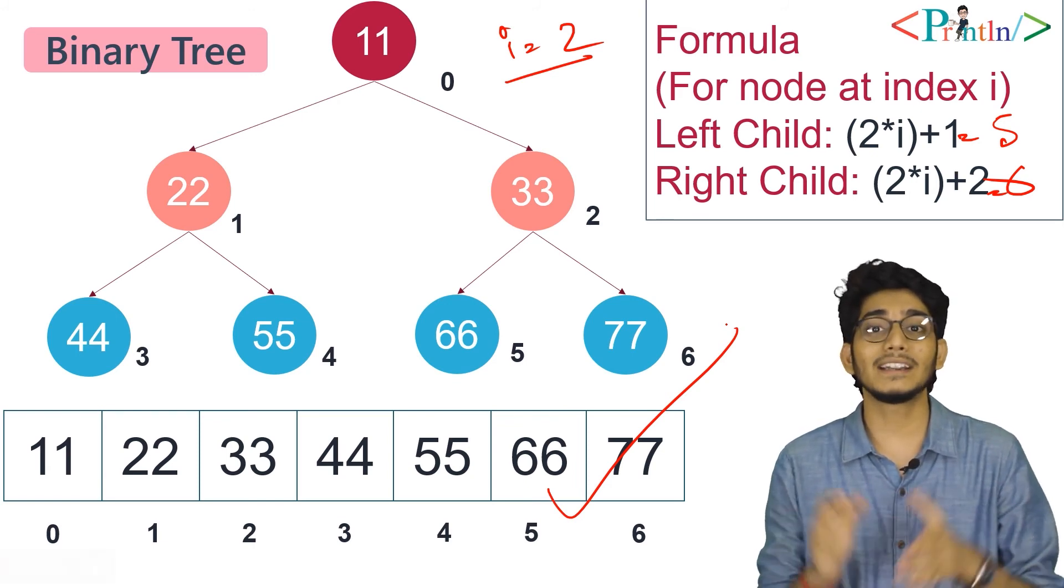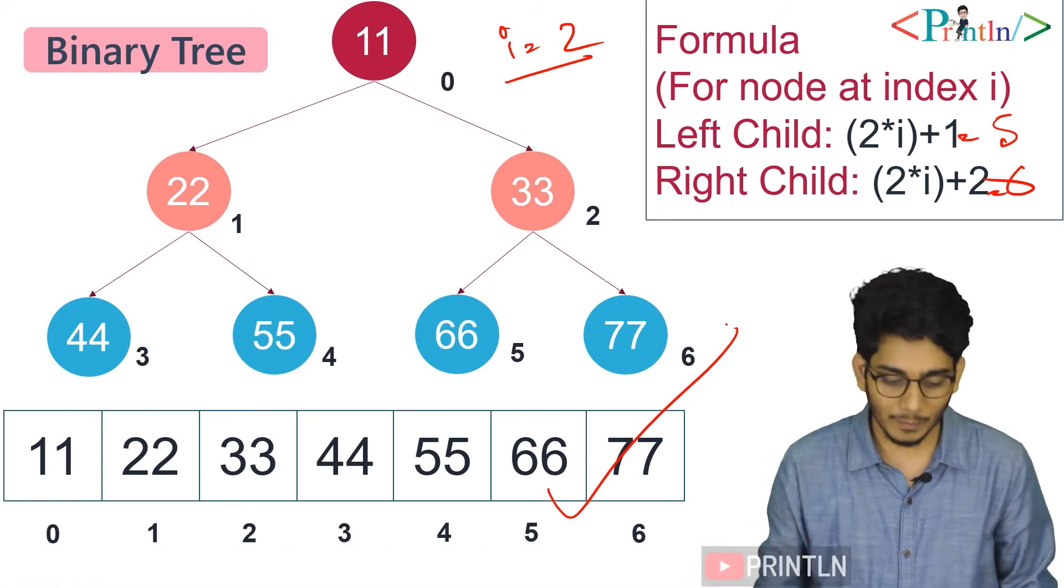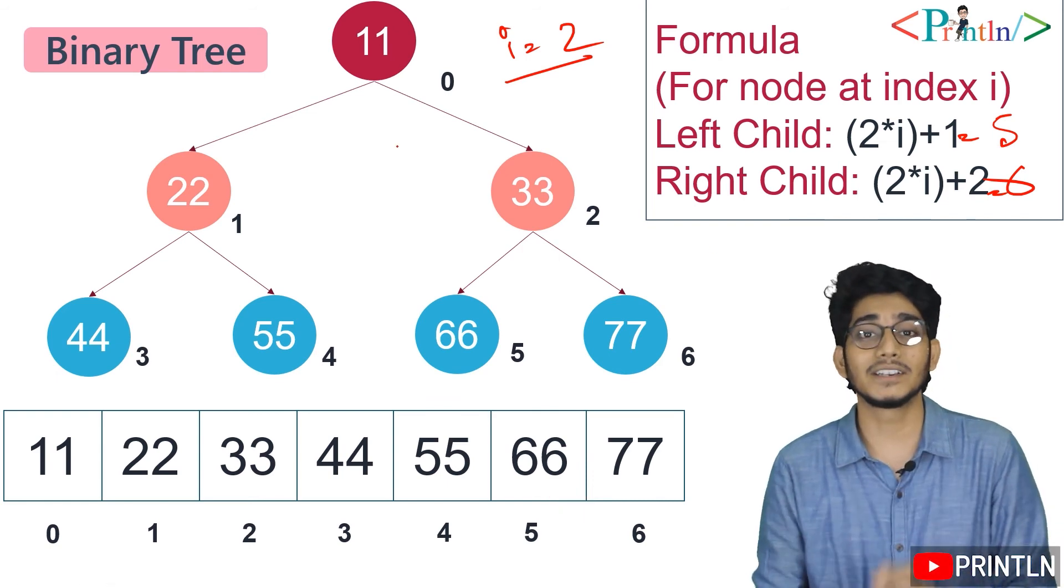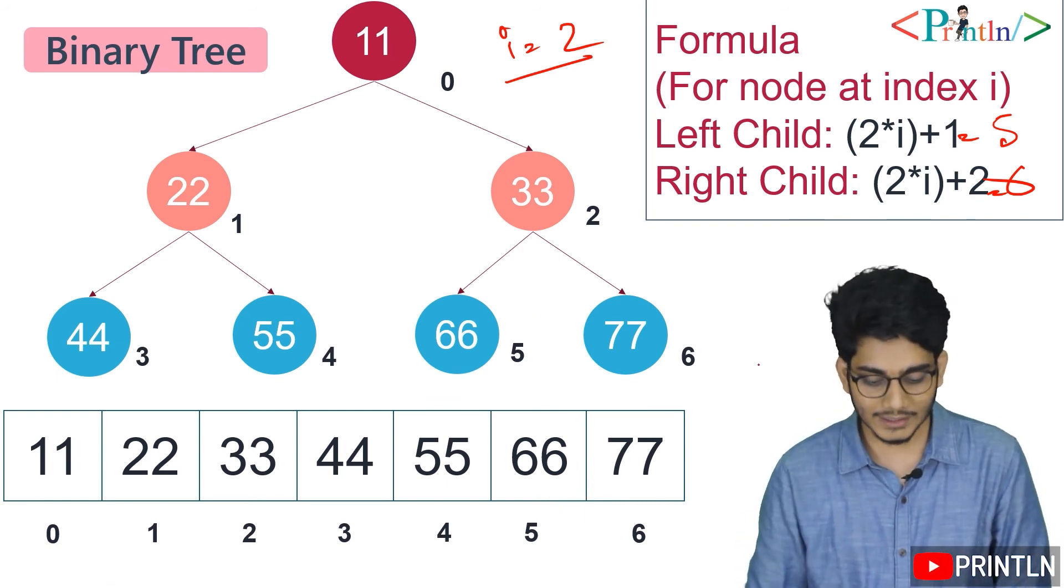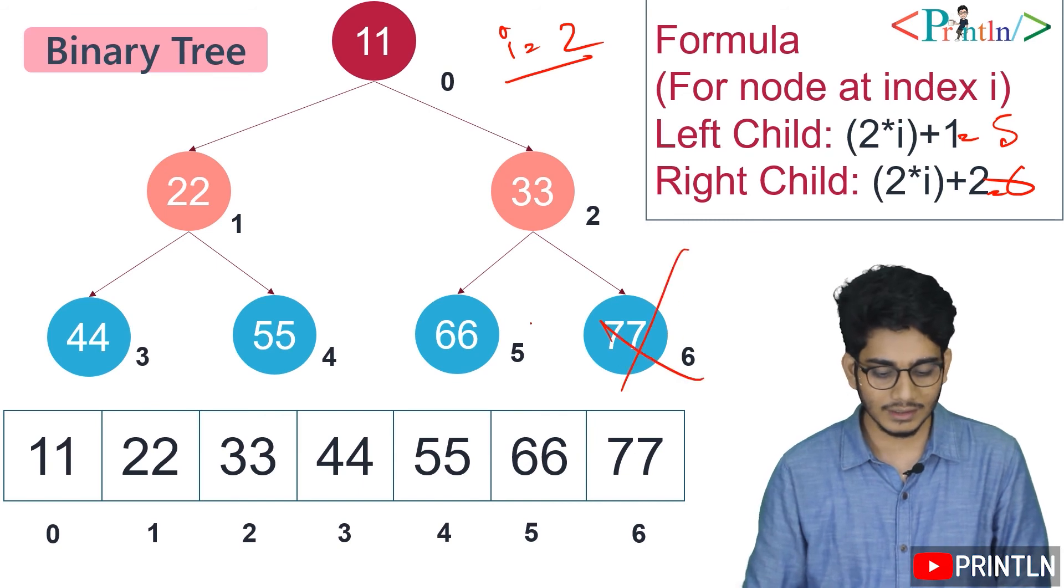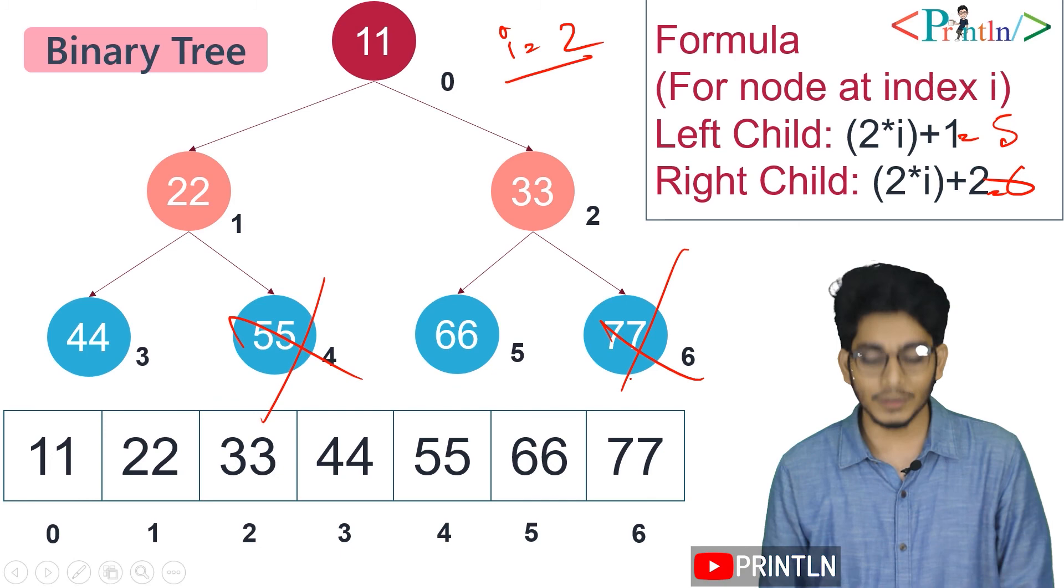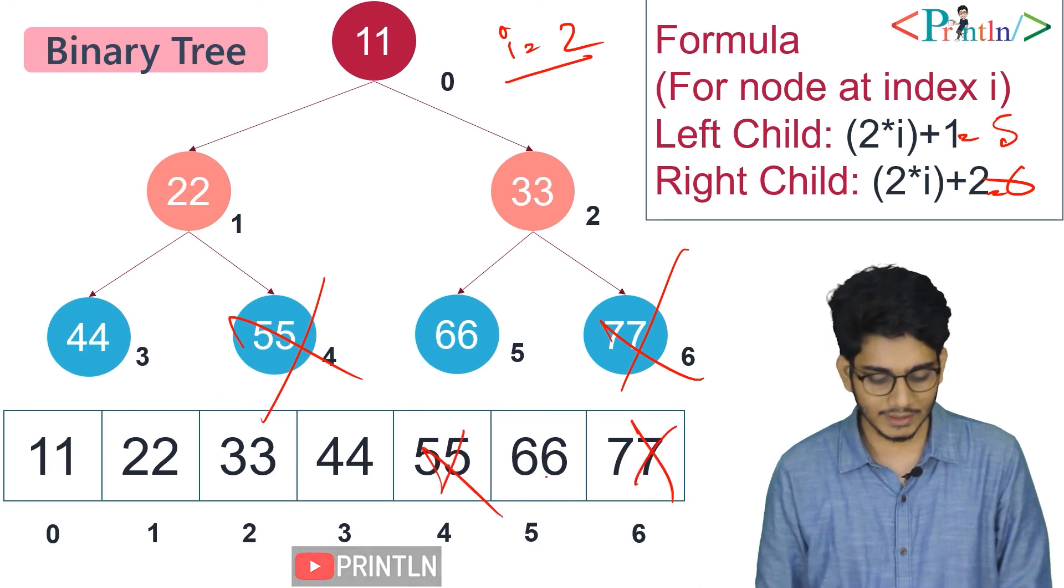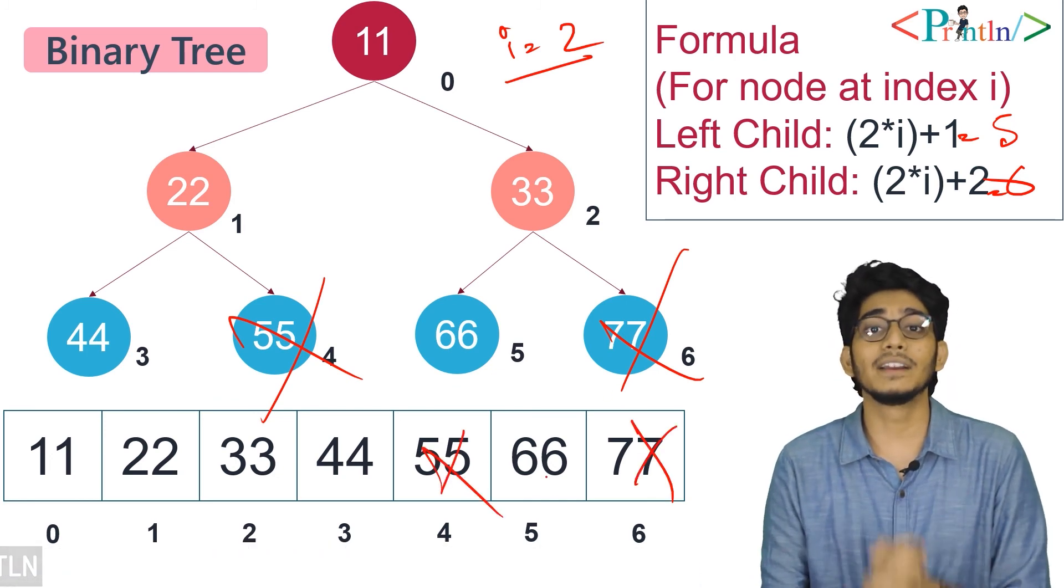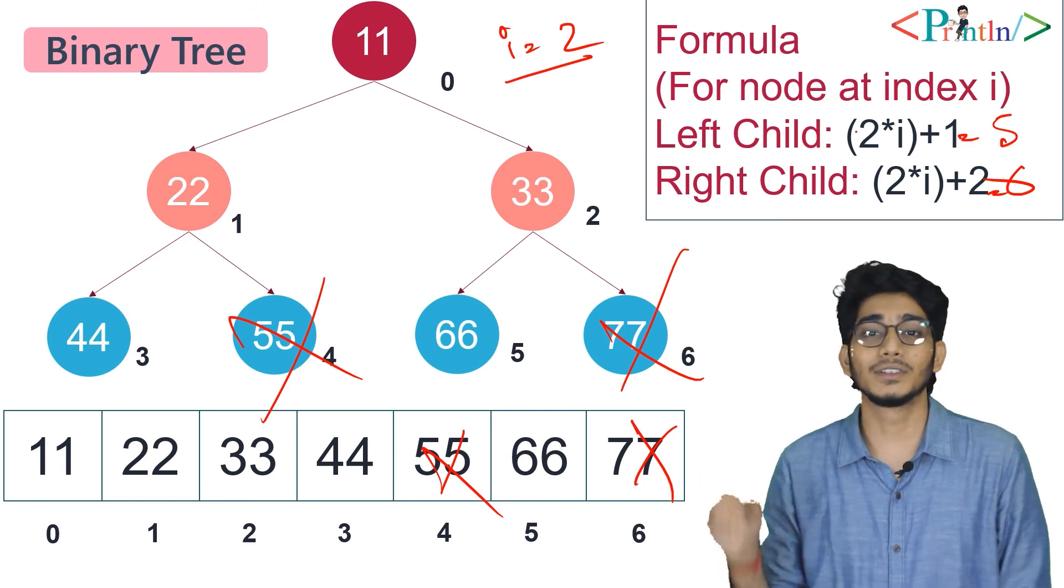But there are some drawbacks. The main drawback of implementing a tree using an array is the wastage of memory. If we don't have these values in the tree, this memory will be wasted. That is why we'll use a linked list for implementing trees.